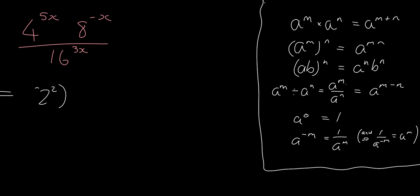4 is 2 squared. 8 is 2 cubed. And 16 is 2 to the 4. And if you didn't know this, if you didn't immediately know 16 is 2 to the 4, remember you've learned how to do prime factorization. So you can always do prime factorization on a number to see what its building blocks are.